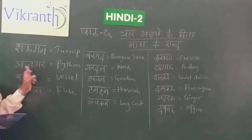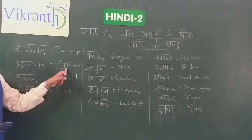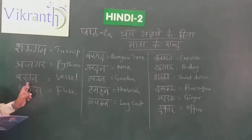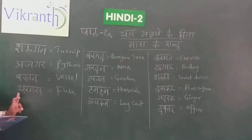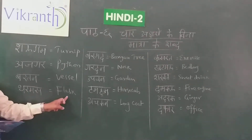Ajgar means Python. Ba-ra-ta-na — Barthan means vessel. Thermas — tha-ra-ma-sa — Thermas means flask.